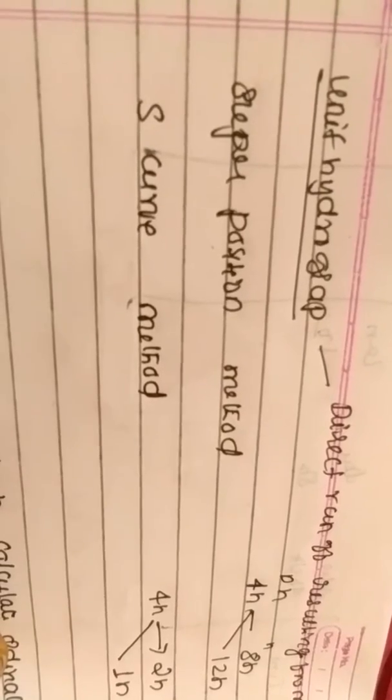Direct runoff resulting from one unit depth is called unit hydrograph. There are two methods: the superposition method and the S-curve method. If you have a four-hour unit hydrograph and need to calculate an eight-hour or twelve-hour ordinate, we use the superposition method. If you need to calculate a two-hour or one-hour hydrograph from a four-hour unit hydrograph, then we use the S-curve method.